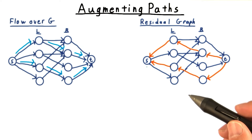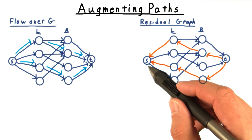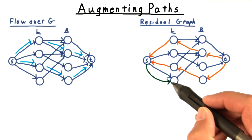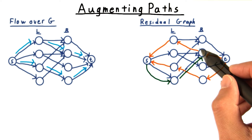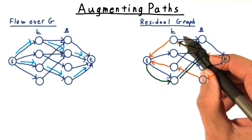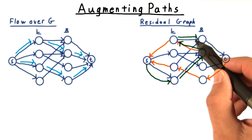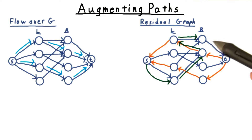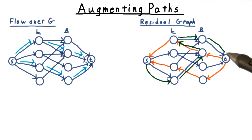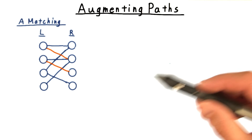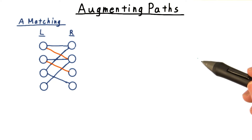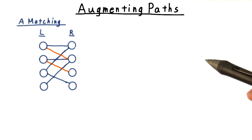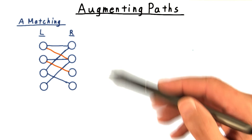The result of all this is that any augmenting path must start at an unmatched vertex, and then follow an unmatched edge, followed by a matched edge, followed by an unmatched edge, until eventually it reaches an unmatched vertex on the right-hand side, and then it can follow that edge to the sink. This realization allows us to strip away much of the complexity of flow networks and define an augmenting path for bipartite matching in more natural terms.